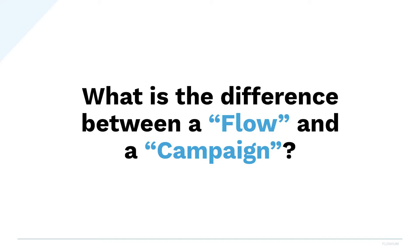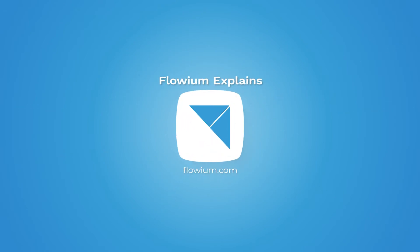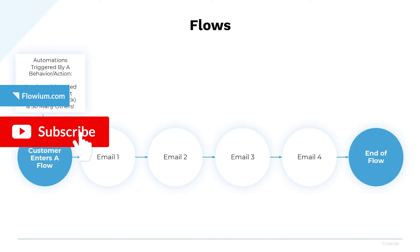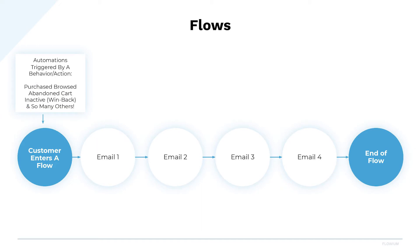What is the difference between a flow and a campaign? Flows are automations that are triggered by your customer's behaviors or actions. It is a series of emails that are connected that go out to that customer based off of that behavior or action. Some of those behaviors might be that they purchased from your website, maybe they browsed and left, or perhaps they started and left their cart, which would create an abandoned cart flow. When that customer enters, they then start a series of emails that you have set up once, and that will repeat for each customer that repeats that behavior or action.